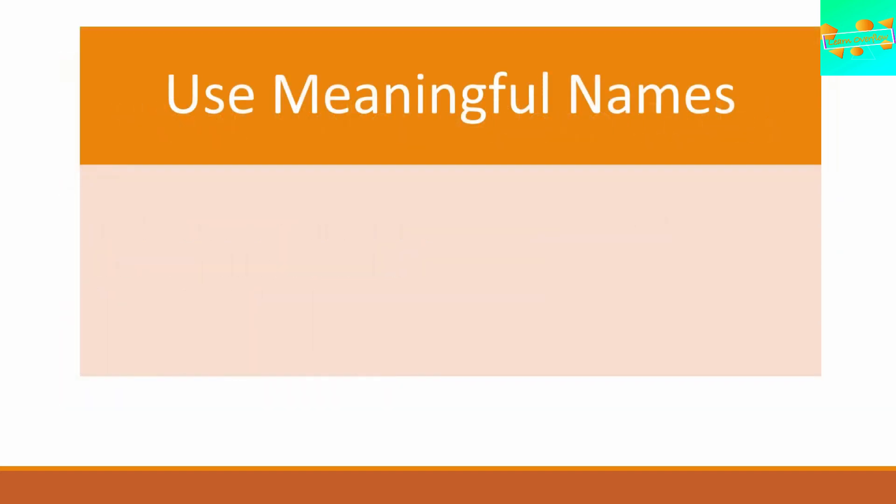Moving on, you should know about naming. The use of meaningful names is an important aspect of writing good code. Use variables that define their purpose. Whenever you use any variable name, make sure you give it a name suitable to its purpose. It shouldn't be like giving names such as x, y, z, a, b, c, i1, i2 — those are not meaningful names. For example, if you are writing an array of roll numbers of students, name it 'rollNumber'. That way it becomes easy to understand and the person reading the code directly knows what that variable does.